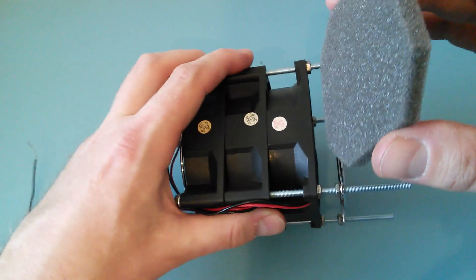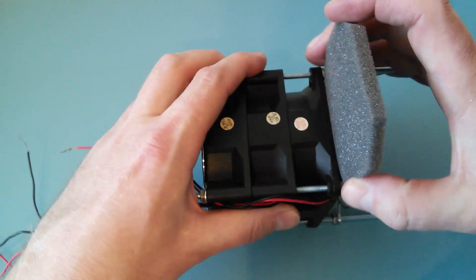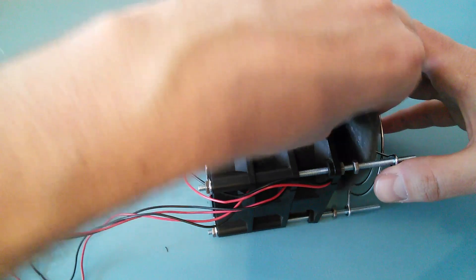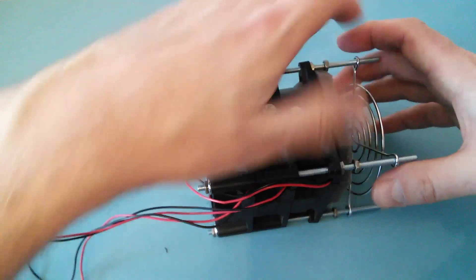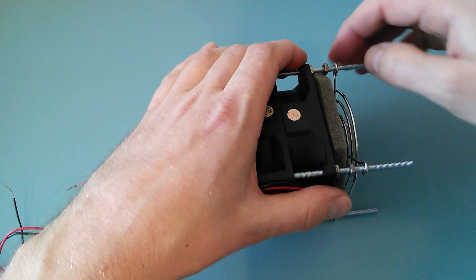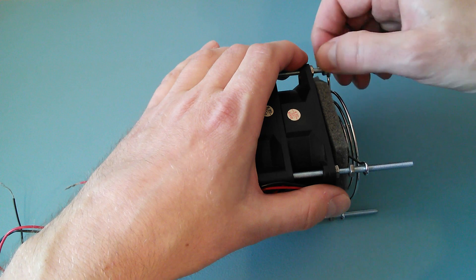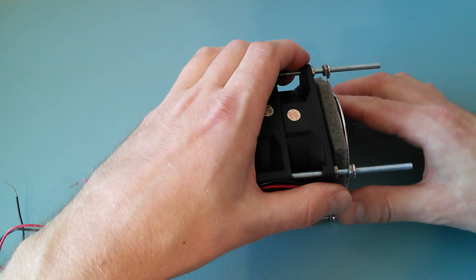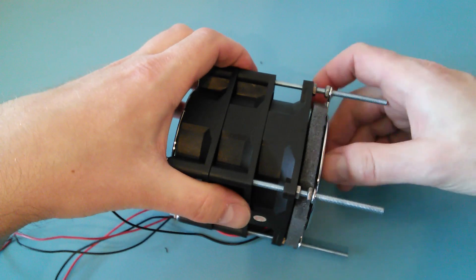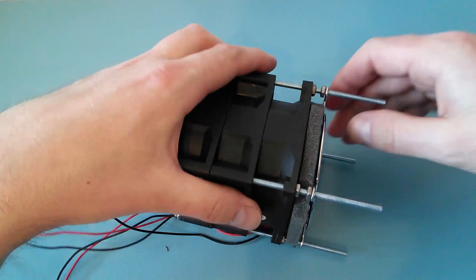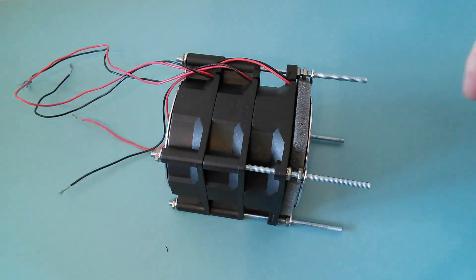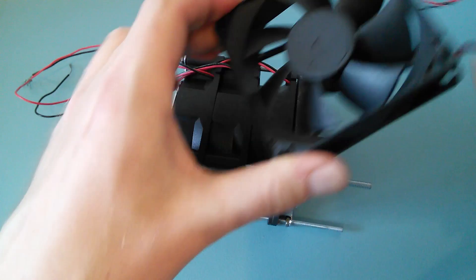Insert the filter between the last fan and the grill. Adjust the nuts to make the space for the filter even on each side. Now mount the last fan.